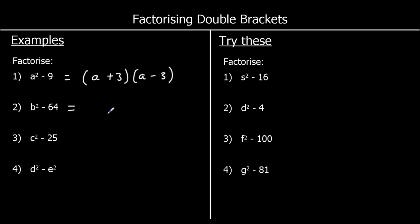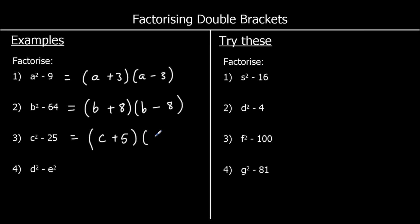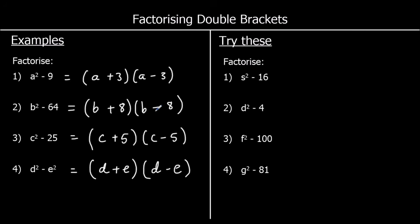For the second one, what multiplies to make 64? 8 times 8. So it's (b+8)(b−8). For the third one, 25 is 5 squared, so it's (c+5)(c−5). And for the last one, we've got d squared and e squared, so we're going to have (d+e)(d−e). If we expanded these brackets, we'd get back to our questions.